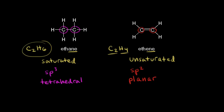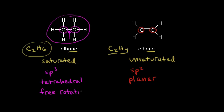Let's look at the bonding between the two carbons. For ethane, this sigma bond between the two carbons has some free rotation, so different conformations of the ethane molecule are possible. We have free rotation about the sigma bond between our two carbon atoms.